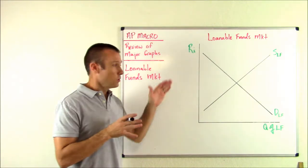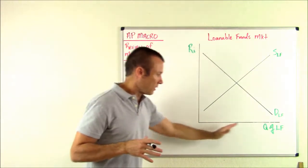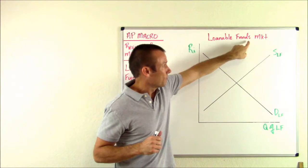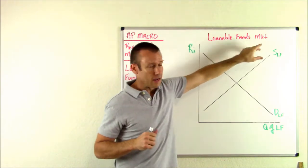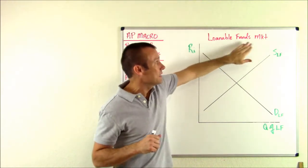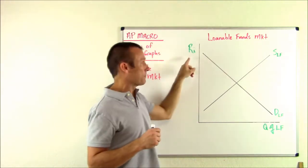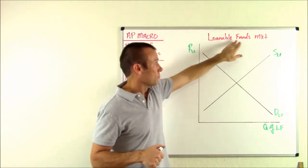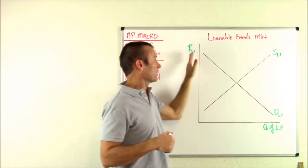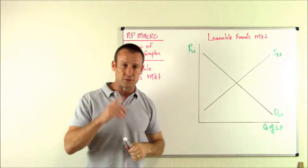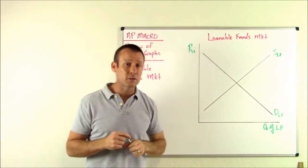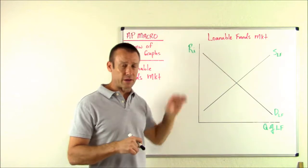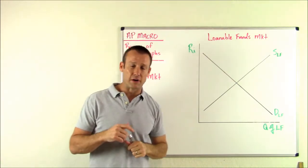Let's get to the labeling of our axes. First of all, it's the loanable funds market. If it was the t-shirt market, what would I put here? The price of t-shirts. Loanable funds market — what am I going to put here? The price of loanable funds. What is the price of loanable funds? It's the real interest rate.